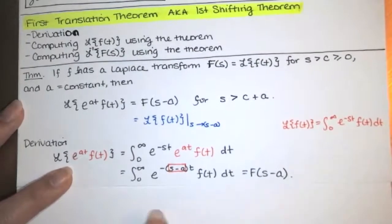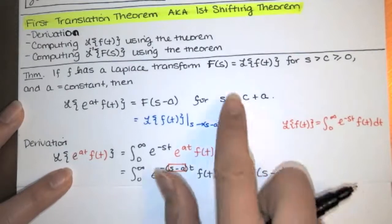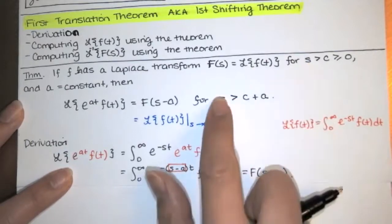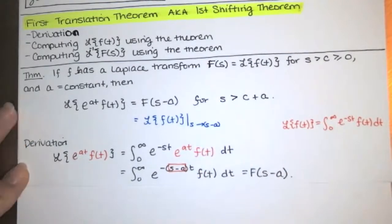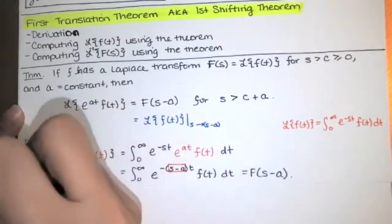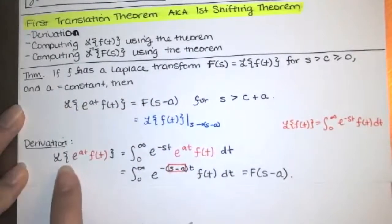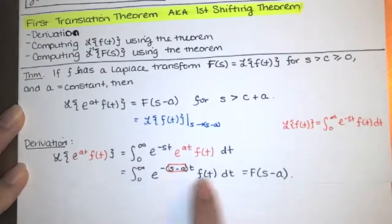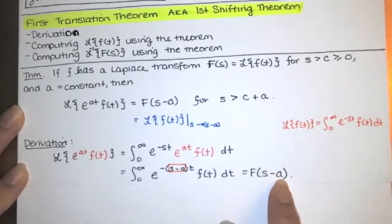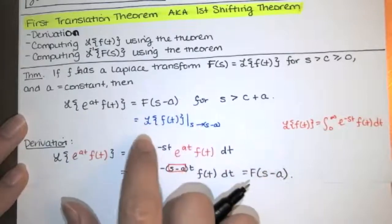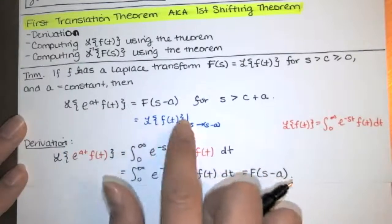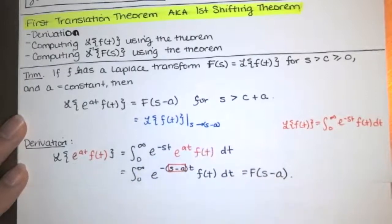This works as long as s minus a is greater than c, and if s minus a is greater than c, you just add a to both sides to get that inequality. So the Laplace transform of e to the at times f of t is equal to F of s minus a. In practice, we take the Laplace transform of f first, and then replace the s with s minus a.